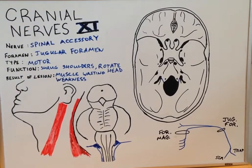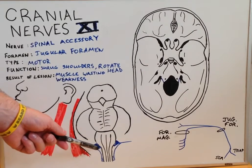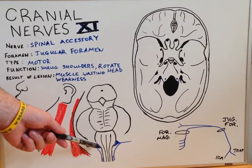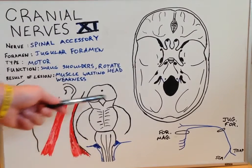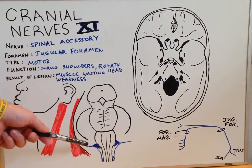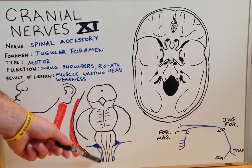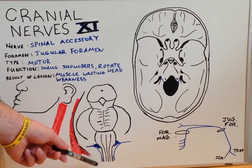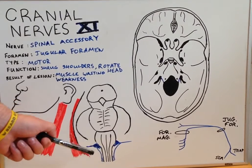The spinal accessory nerve has two points of origin. On the lateral and inferior portion of the medulla oblongata, within the cranium, is called the cranial part, as well as down below on the spinal cord, which is called the spinal part.